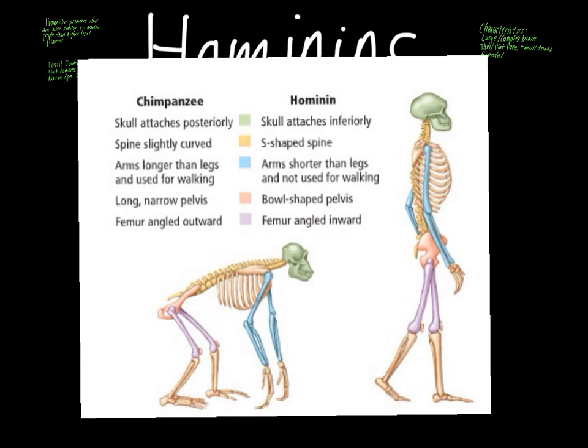This is an image from the textbook comparing changes between chimpanzees and hominids due to bipedalism. For example, looking at where the skull attaches: in a chimp, it attaches posteriorly — in the back. The gap in the back of the skull connecting to the spine is found at the back of the head. For us, it's on the inferior part of the head — on the bottom. So for most hominoids, the skull attaches in the back, whereas for hominids, the skull attaches to the spine at the base.